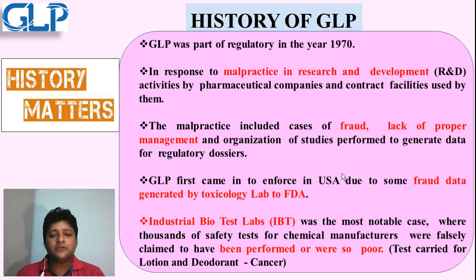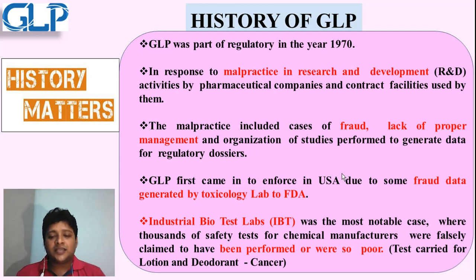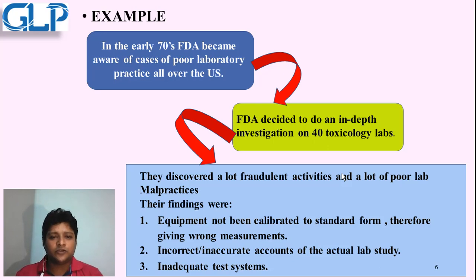GLP first came into force in the USA because of fraud data submitted by a toxicology lab to the FDA. An example is Industrial Bio-Test lab, which performed some tests on lotion and deodorant and produced fake or malpractice data to the FDA. It was later concluded that the tests performed on animals showed that they developed cancers. In the year 1970, FDA came to know about these poor laboratory practices going on in the US.